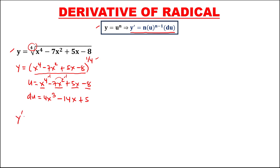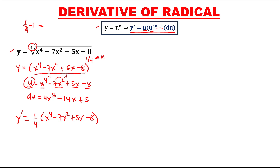Now apply the formula. We have y prime equals n, where n is the exponent, so 1 over 4, then times u — and u is x to the power 4 minus 7x squared plus 5x minus 8 — to the power n minus 1. Using the shortcut method for 1 fourth minus 1: just subtract 1 minus 4, that's negative 3, so therefore we have negative 3 over 4.